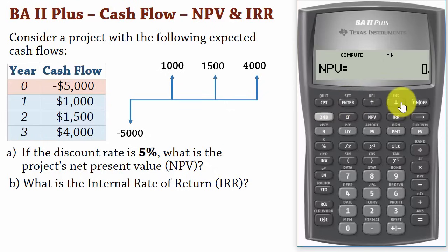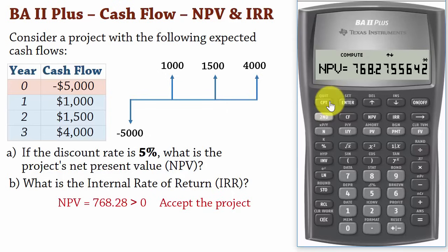Press the down arrow button. And then compute the net present value. The net present value is 768.28. Since it is positive, we will accept the project. Otherwise, we will reject it.